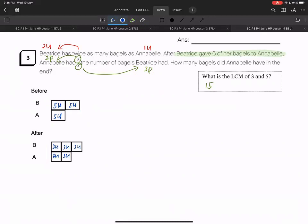What is the difference in units right now for Beatrice? Beatrice at first had ten units. Beatrice in the end had nine units. Hence the difference would be equals to one unit, and that will give us six bagels.